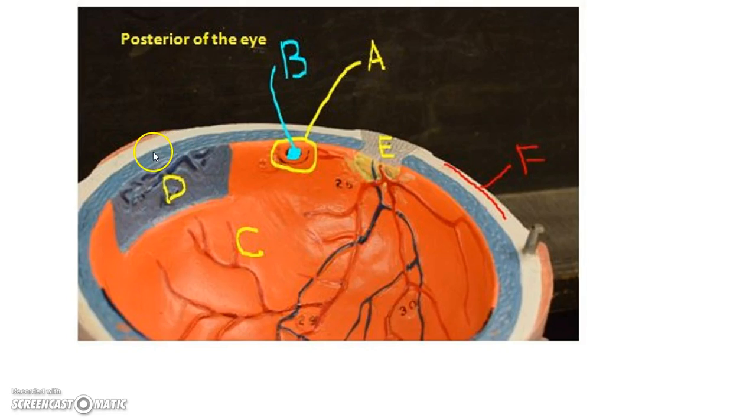On this white, you can see the sclera, which holds the shape of the eye. You can also see the choroid layer. The choroid layer is a vascular layer, which is going to deliver oxygen and nutrients to the retina. You also see the retina has a very large blood supply right here, so that choroid layer is the blue layer.